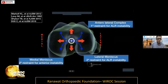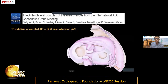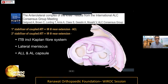As noted by Dr. Moira, the ramp lesion is a secondary restraint for anterior instability. We also know that the anterolateral complex is a primary restraint for anterolateral rotatory instability. The ACL is the primary stabilizer of coupled anterior tibial translation and internal rotation near extension, while the secondary stabilizer — the iliotibial band — includes the Kaplan fiber system, the lateral meniscus, the anterolateral capsule, and the anterolateral ligament.